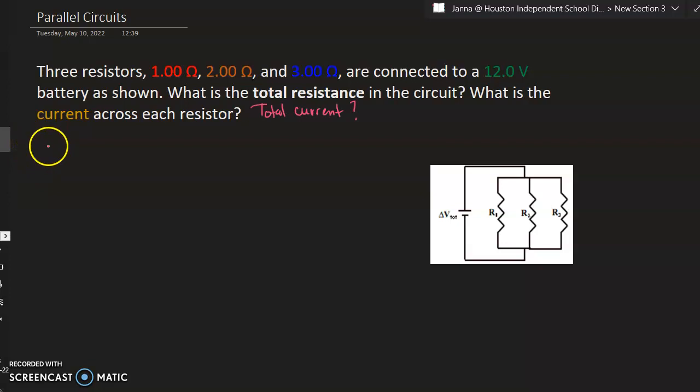What is the total resistance in the circuit? What is the current across each resistor? We're also going to calculate the total current. Okay, first thing, we'll get the equivalent resistance or the total resistance.